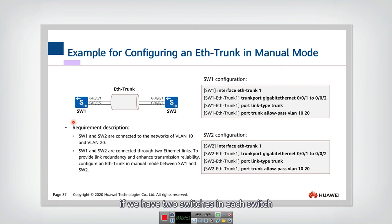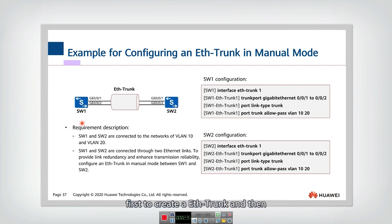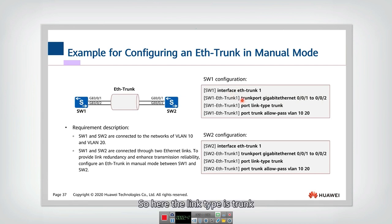In this example we have two switches, and each switch has two interfaces. These two interfaces should be aggregated into an ether trunk. For switch one, we first create a trunk, then add the two interfaces into the trunk, and then identify its type. Here the link type is trunk.